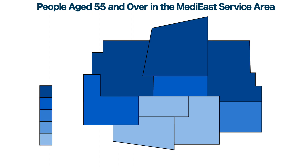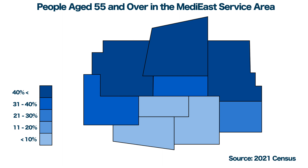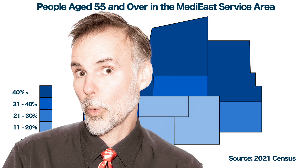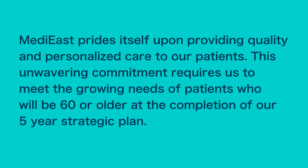The legend on the left side of the map shows the density of residents age 55 or older, ranging from below 10 percent to over 40 percent. The source of this data is the 2021 census. Now you're ready to write a three-part description and analysis to inform the five-year strategic plan for Medi-East.